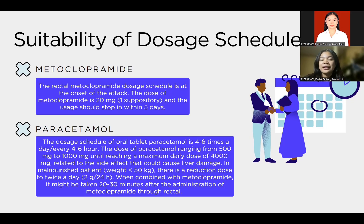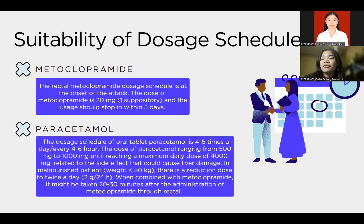Hello everyone, my name is Kadabin Tanesta Putri, with my student number ending in 056, and I will explain the suitability of the dosage schedule. Metoclopramide is an anti-emetic given through the rectal route as the best way to address nausea, vomiting, and swallowing problems. In the emergency department, metoclopramide is also used to treat acute migraine. The rectal metoclopramide dosage schedule is at the onset of the effect: the dose of metoclopramide is 20 mg, one suppository, and the dosage should stop within five days.